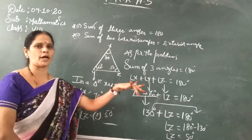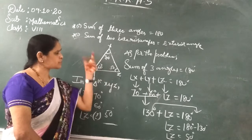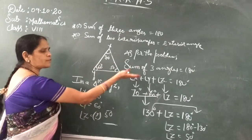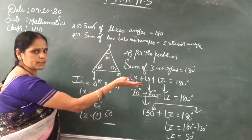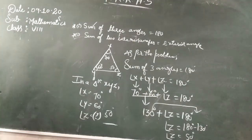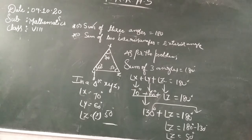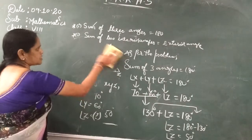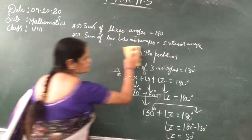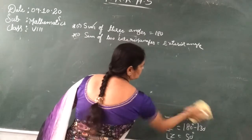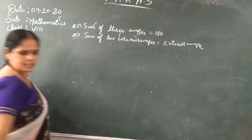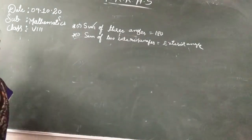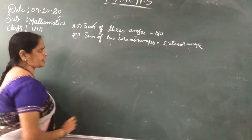In this way you have to find out the value of z — up to 50 degrees. Now the next property is: sum of two interior angles is equal to the exterior angle.